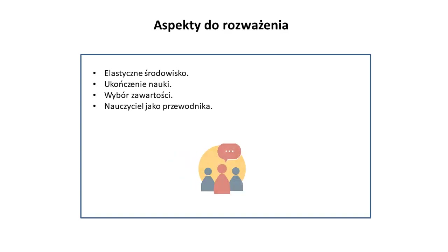Aby zastosować ten model uczenia się w klasie, konieczne jest rozważenie wcześniej aspektów, które ułatwiają jego wdrażanie i skuteczne zastosowanie. Środowisko uczenia się musi być elastyczne i oferować różne środki w celu ułatwienia uczenia się. Treść powinna prezentować różne poziomy zaawansowania, tak aby wszyscy uczniowie mieli dostęp do niej bez problemów, a więc być różnorodna.